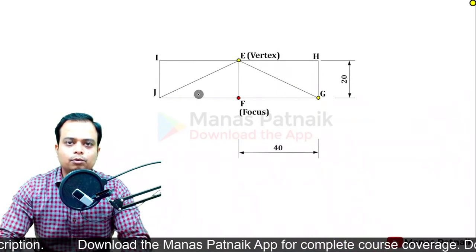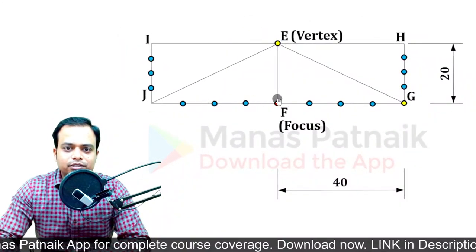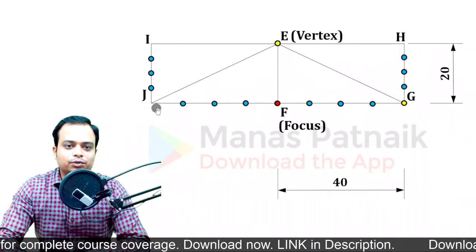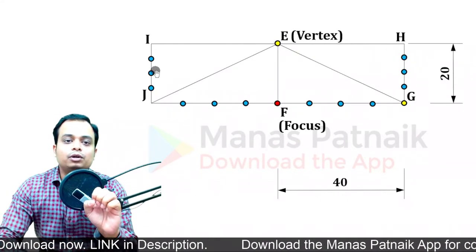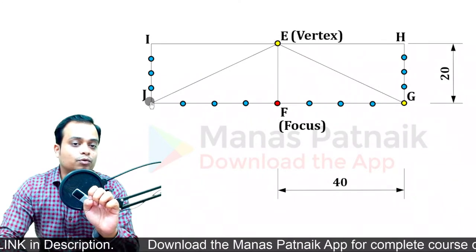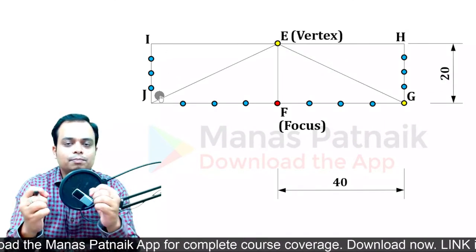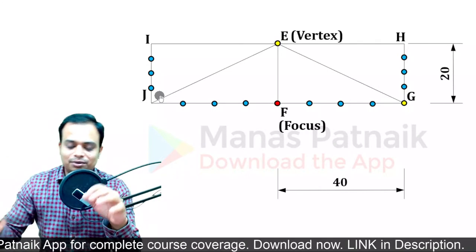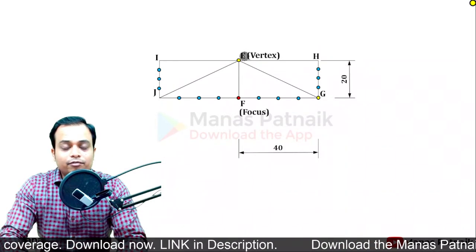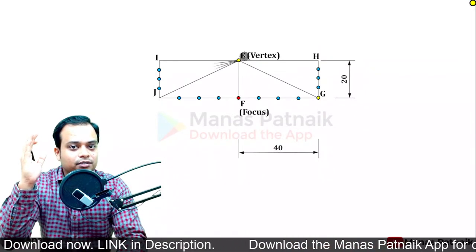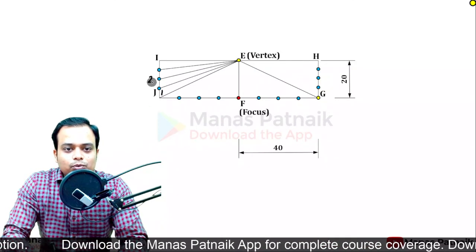Here are the divisions - four divisions on each side. One, two, three, four. If we had gone for five divisions on one side, we would need five divisions on the other side as well. Same number of divisions on both the horizontal and vertical lines - this is exactly how the rectangle method works. Now simply connect these points through the vertex.